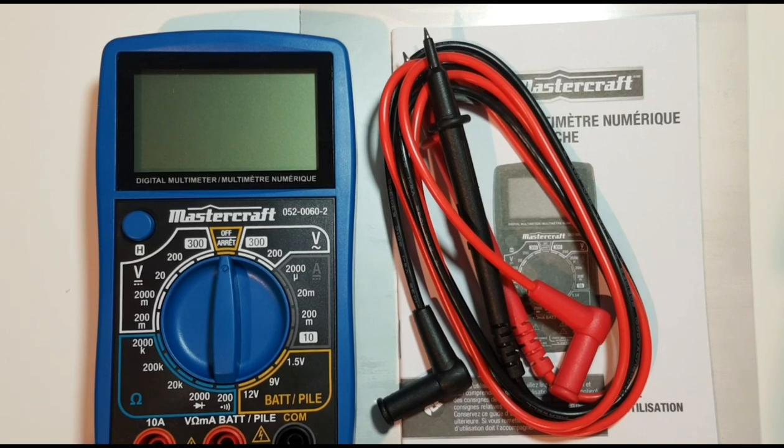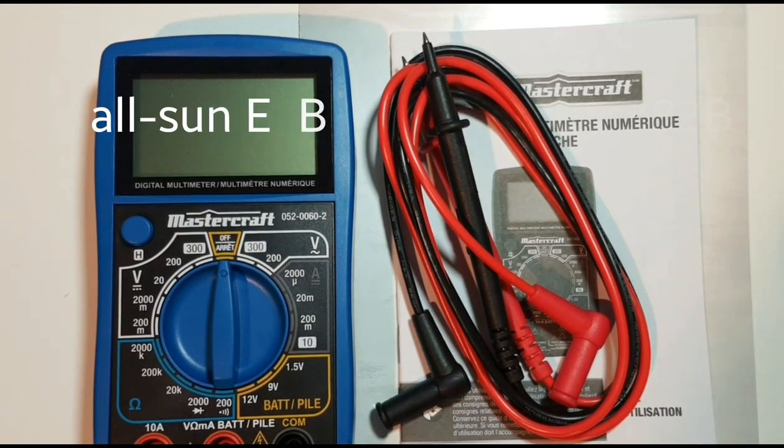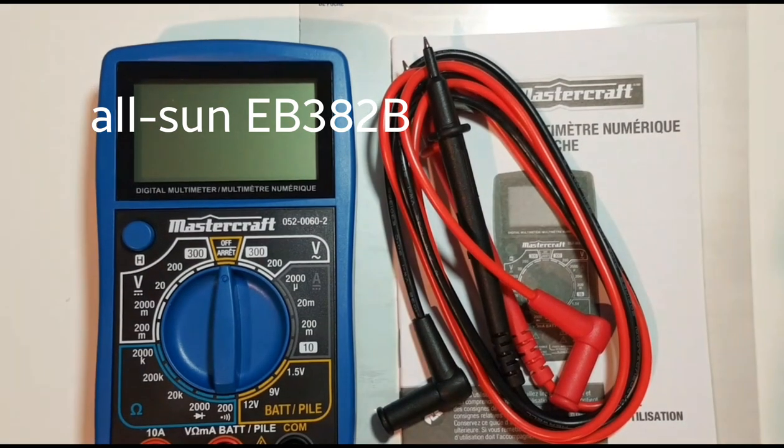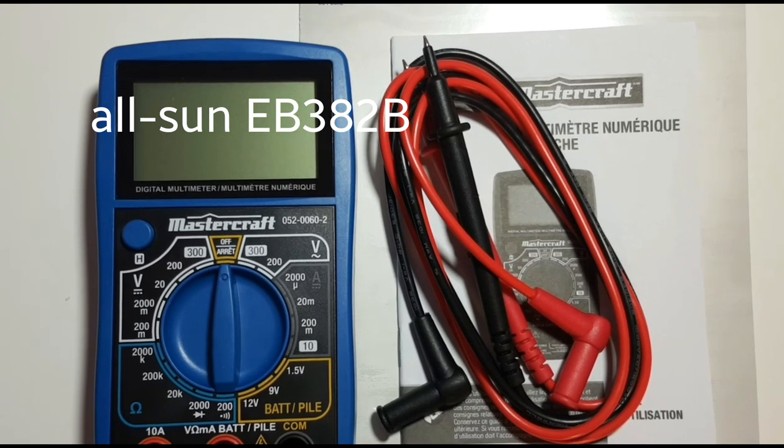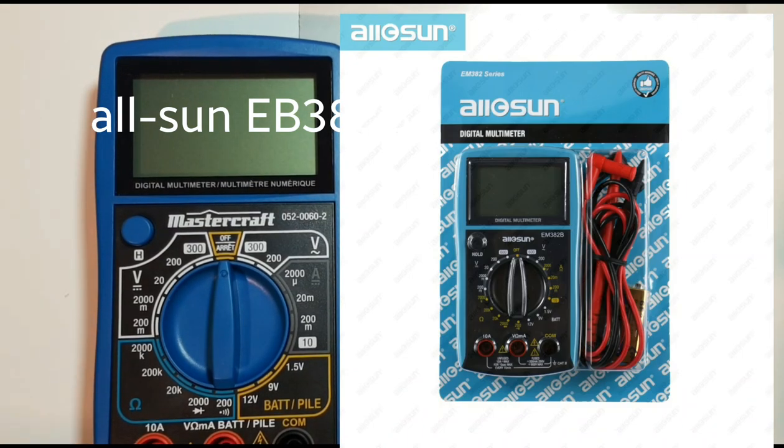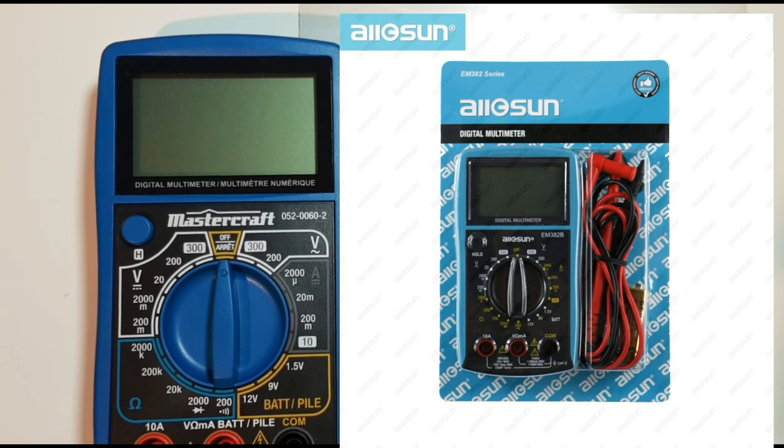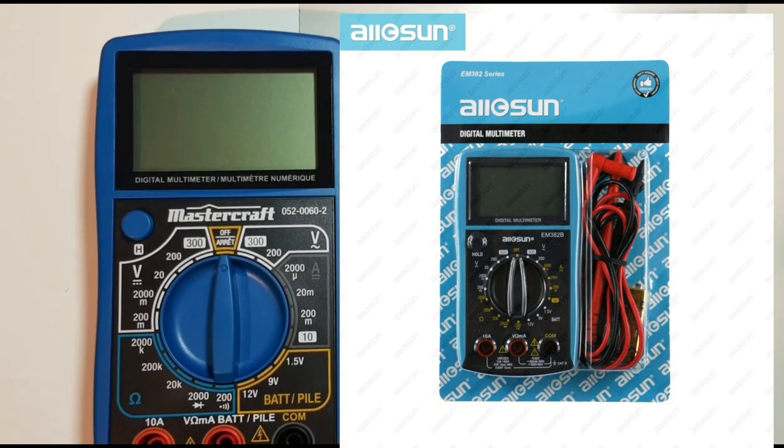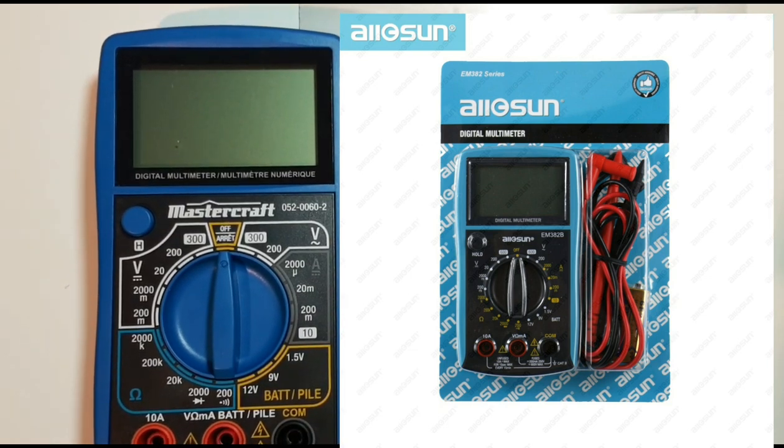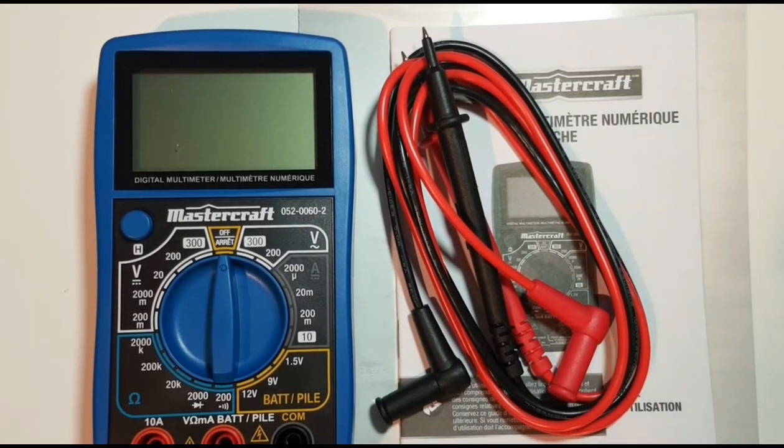Actually made by Allsun. Yes, this meter is also classified as an Allsun EB382B, and like I said it is available on eBay and other online e-tailers, so it is not strictly available at Canadian Tire. Once again, the OEM is Allsun, so basically Canadian Tire in this case has just rebranded the meter and nothing more.